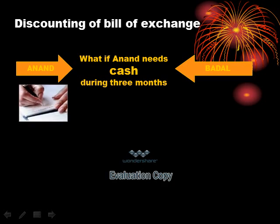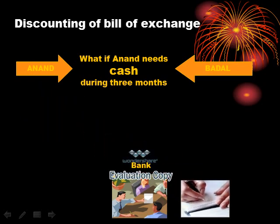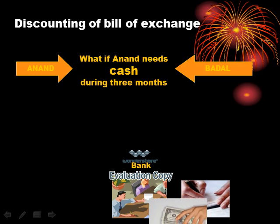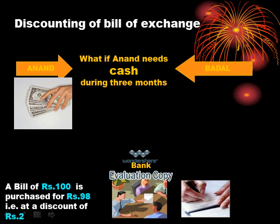He can endorse the bill. But what if Anand needs loose cash for his business purposes? He will go to the bank and sell the bill to the bank. If the face value of the bill is Rs.100, the bank will purchase it for say Rs.98 and give Rs.98 to Mr. Anand. So a bill of Rs.100 was purchased for Rs.98 — that is, the bank has purchased this bill at a discount of Rs.2. Discounting of bill of exchange means selling the bill of exchange to the bank at a discount.